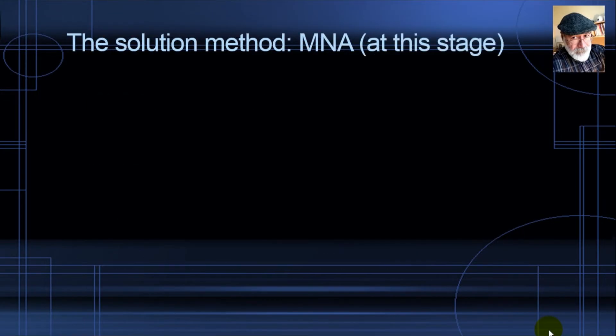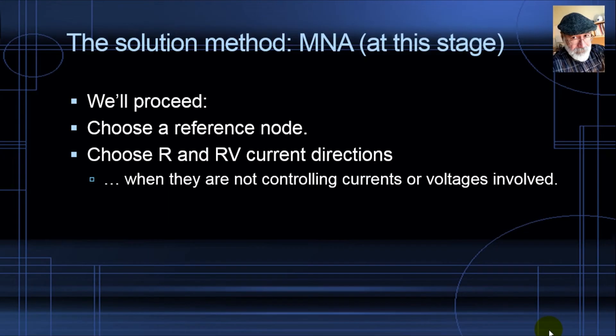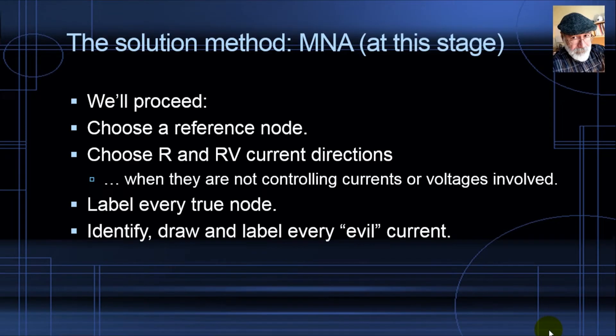At this stage, the first take of MNA, the solution method goes like this. First, choose a reference node. Second, choose the directions for the currents in every R and RV branch, as long as they are not controlling currents or there are no controlling voltages involved, of course. Label every true node 1, 2, 3, 4, 5, 6, etc.